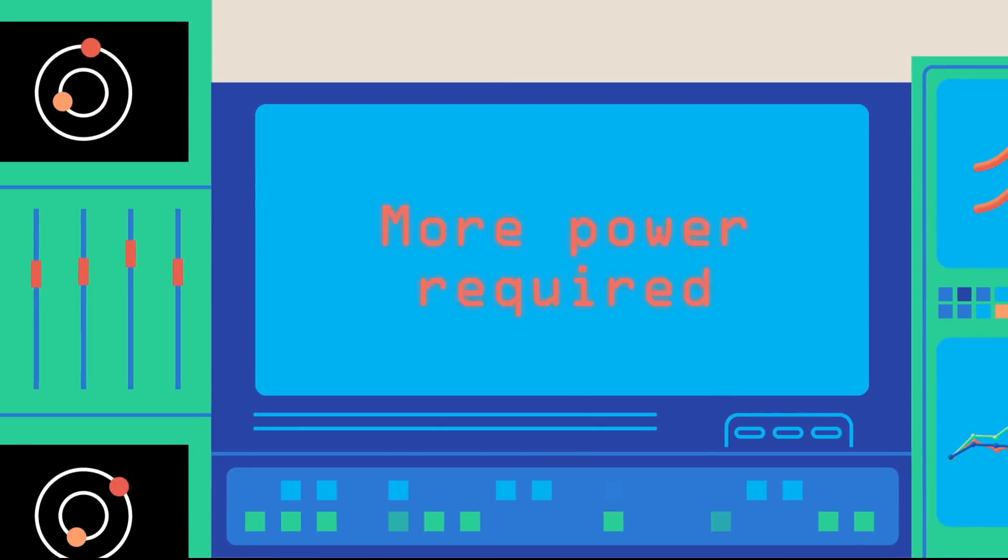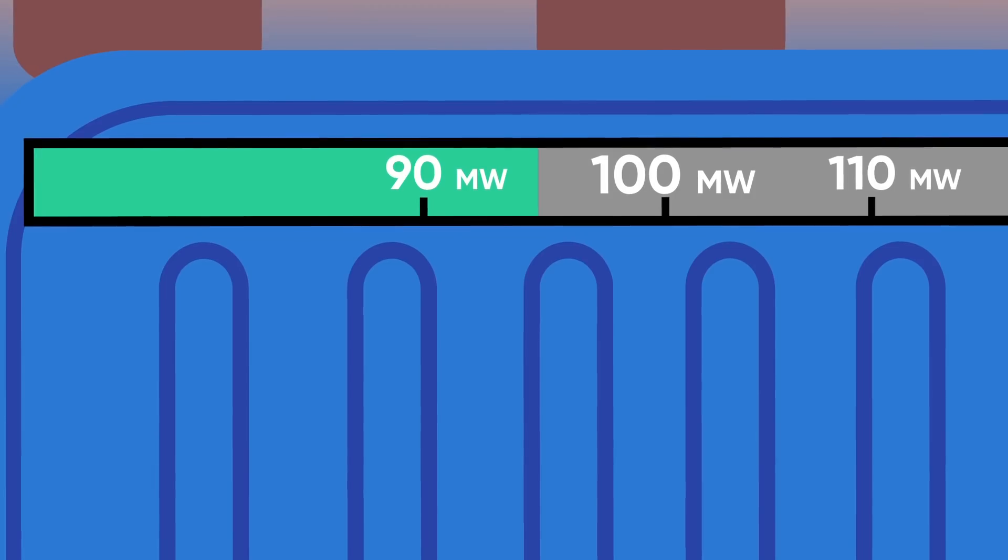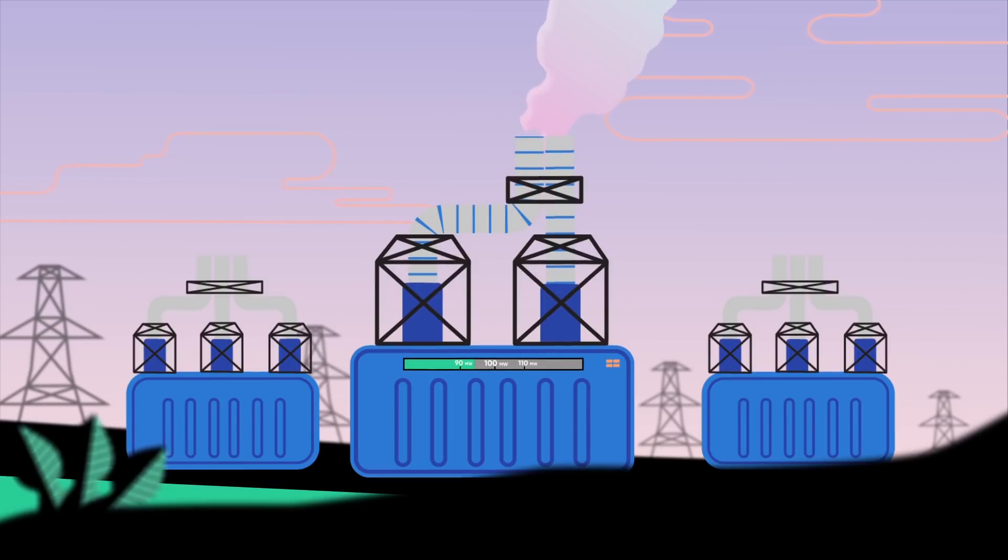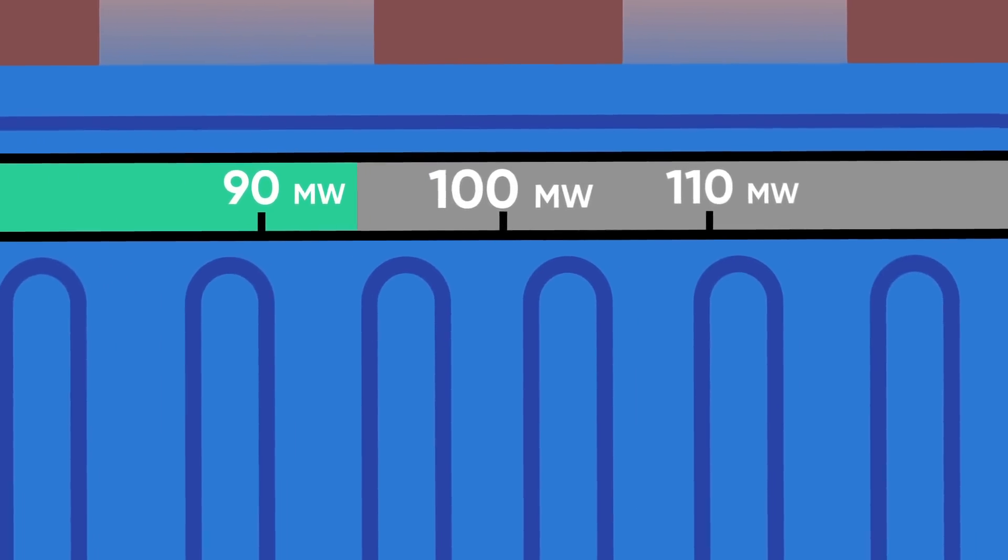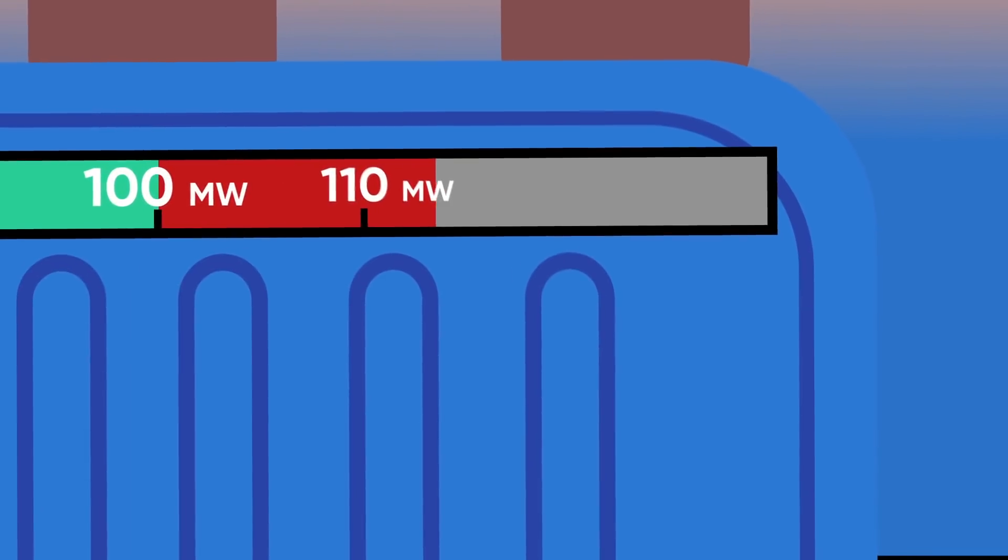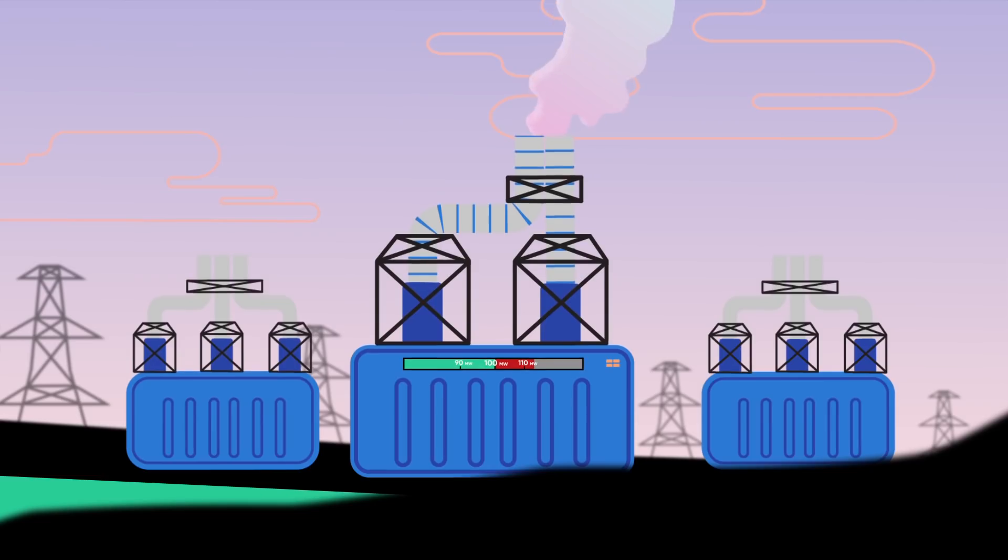However, in these calculations there is always room for variability. For example, in the event that more electricity than originally estimated is needed, the systems administrator keeps reserve plants active.